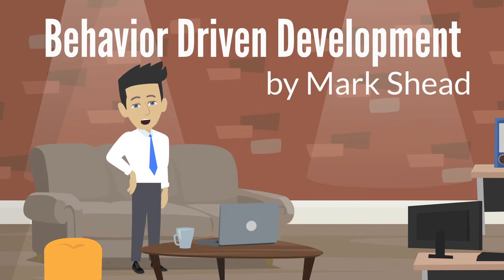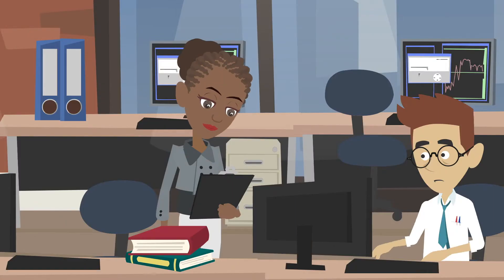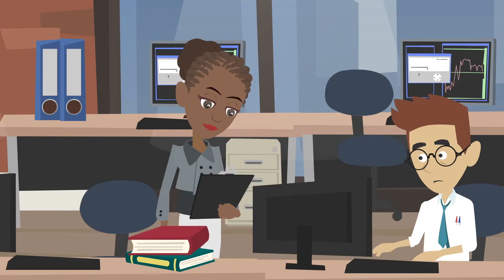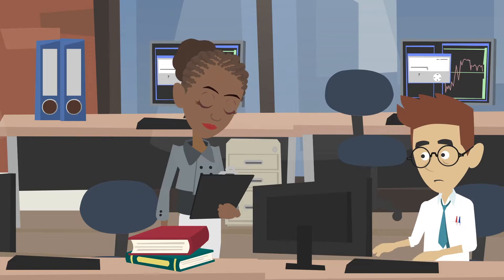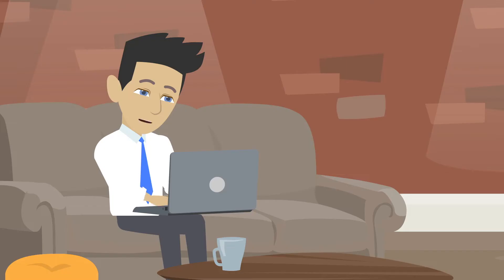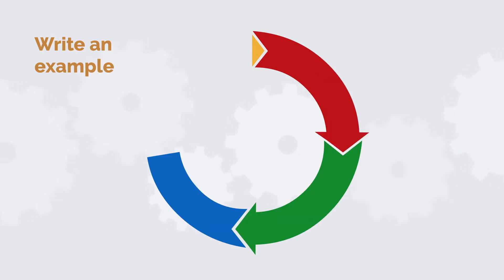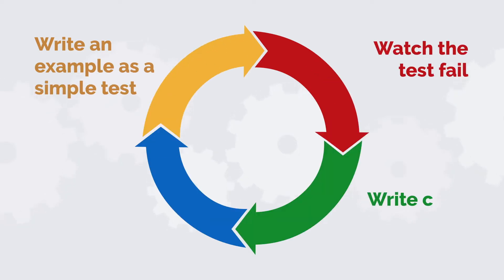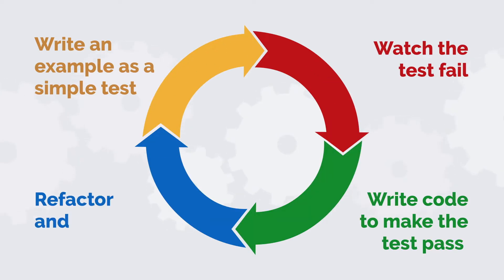What is behavior-driven development? Test-driven development is the process of using examples to guide the development of each function of your software. In TDD, you create your program by working through a loop like this: write an example as a simple test, watch the test fail, write code to make the test pass, then refactor and clean your code.